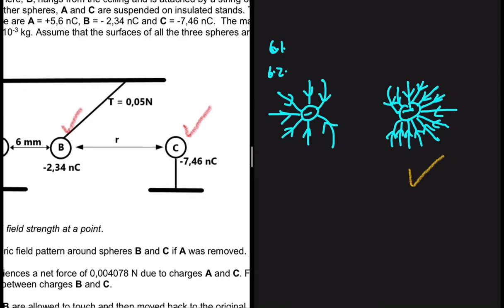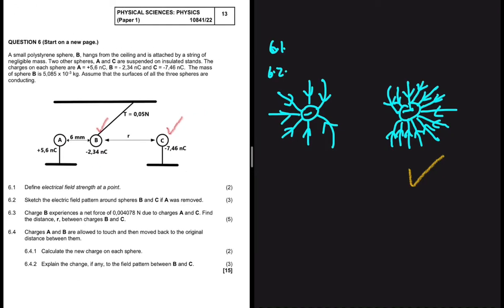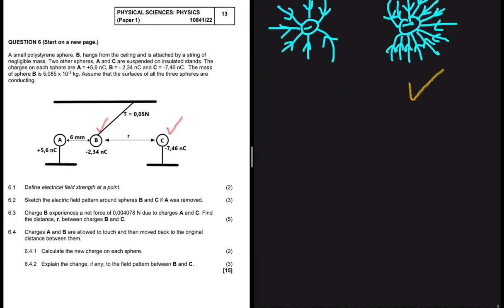That is why I'm deciding to put a lot of electric field lines on sphere C compared to sphere B. Usually examiners don't care about that but you never know. So the greater the magnitude the more field lines you should allocate to that sphere.